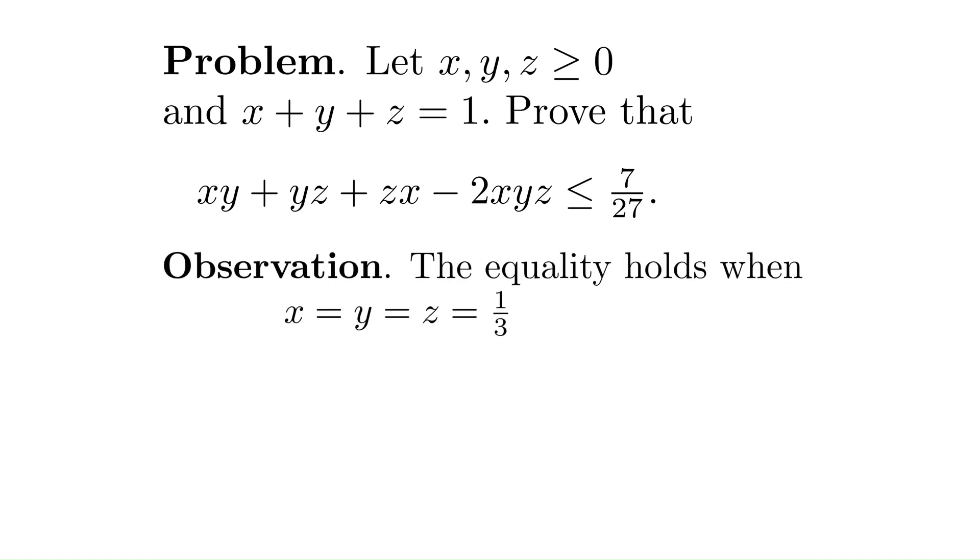First, we have an observation: the equality holds when x, y, and z are all equal to one third. This gives us a hint that the equality might be related to the arithmetic-geometric inequality.